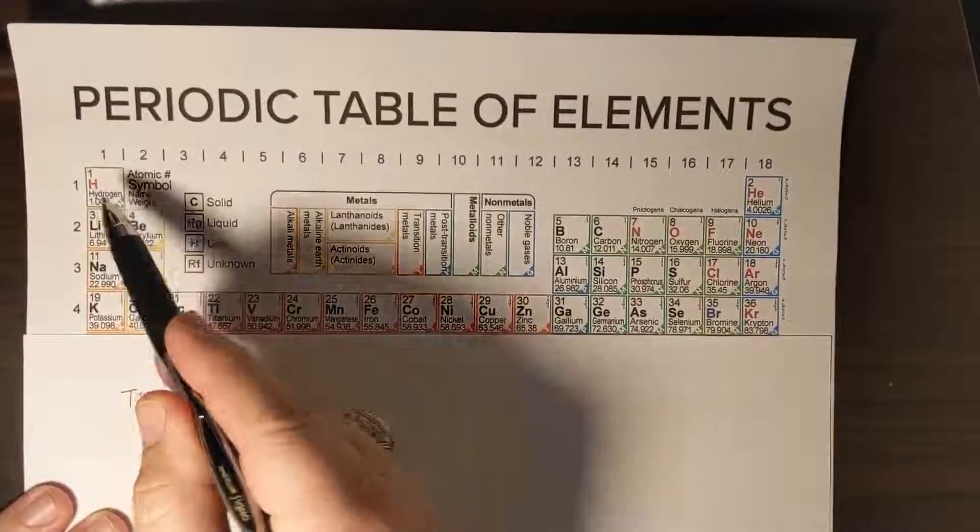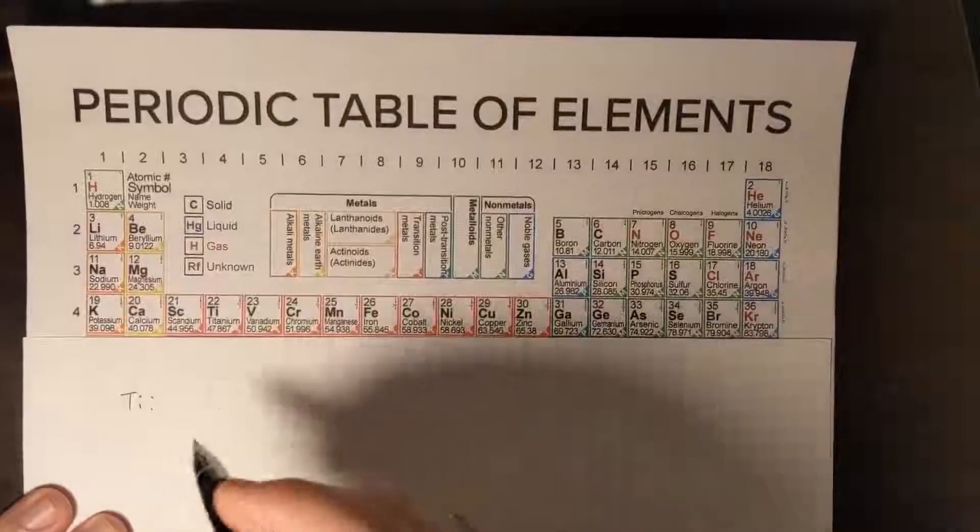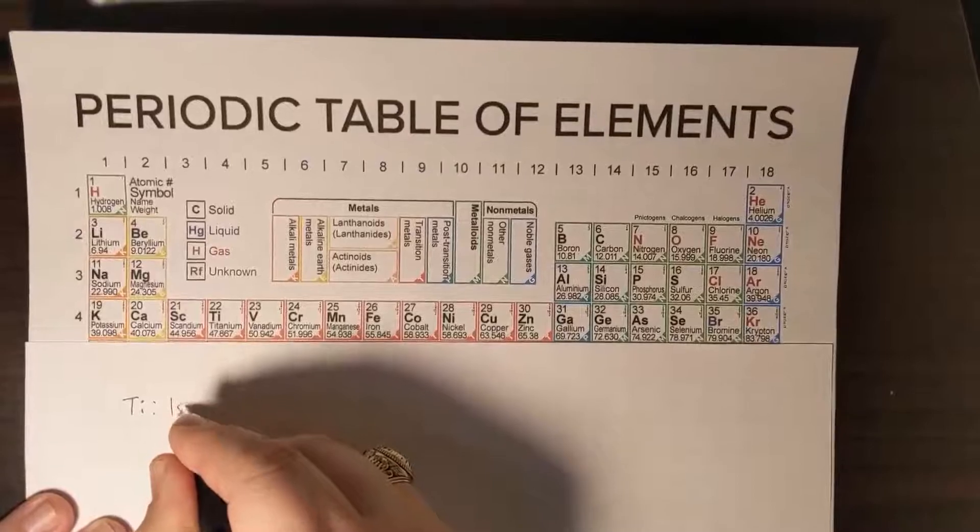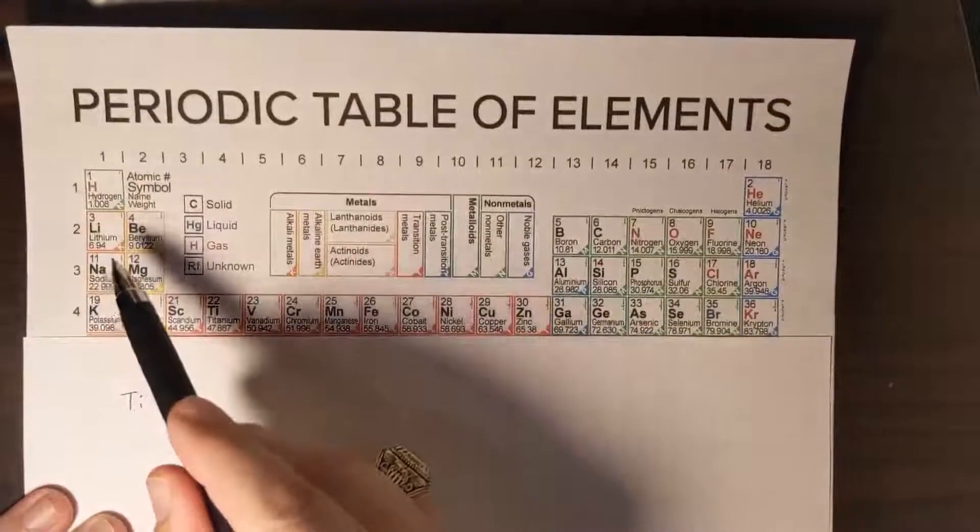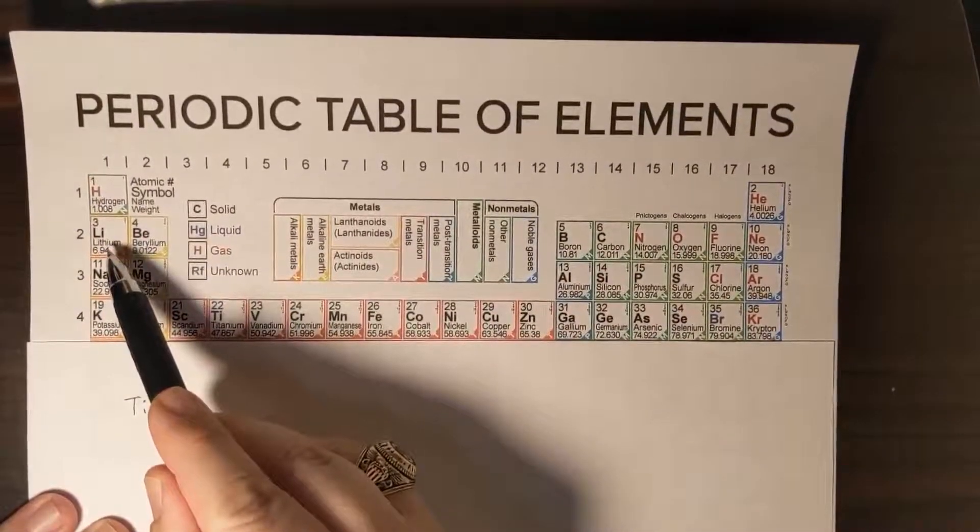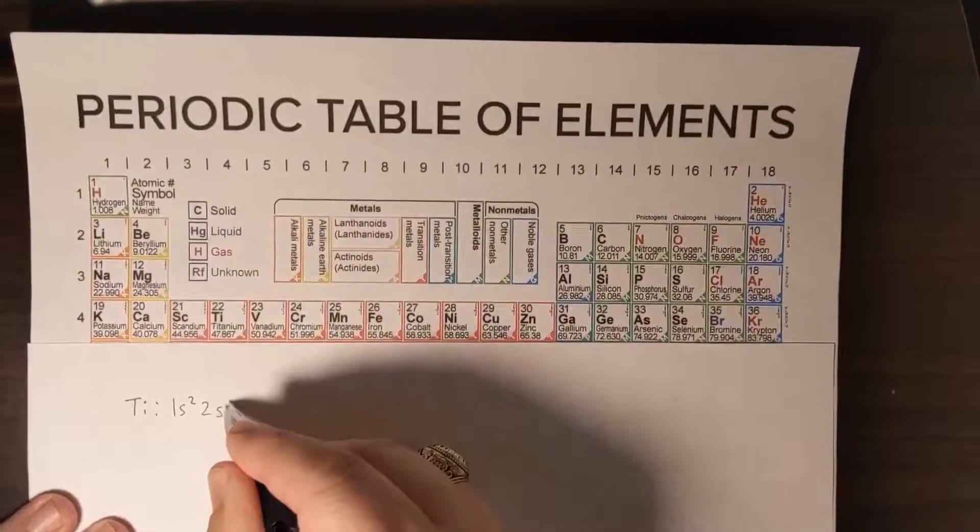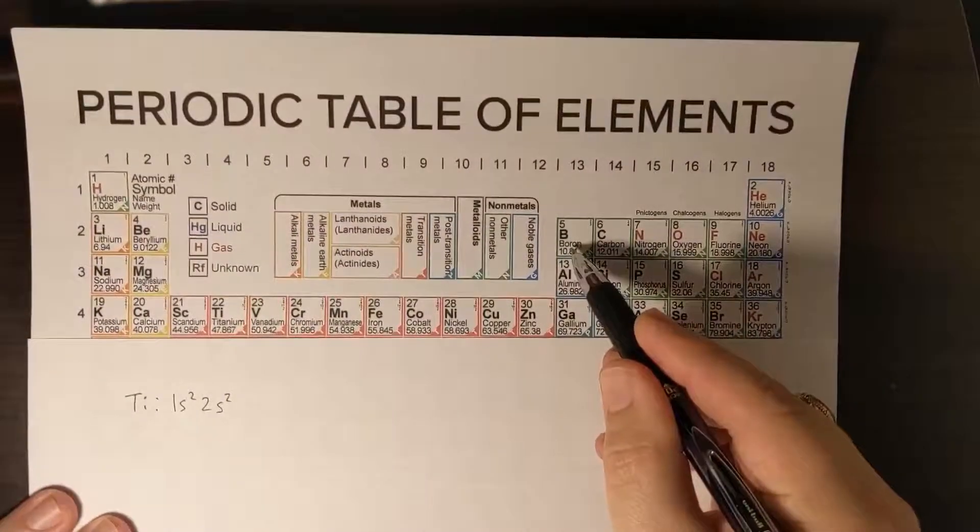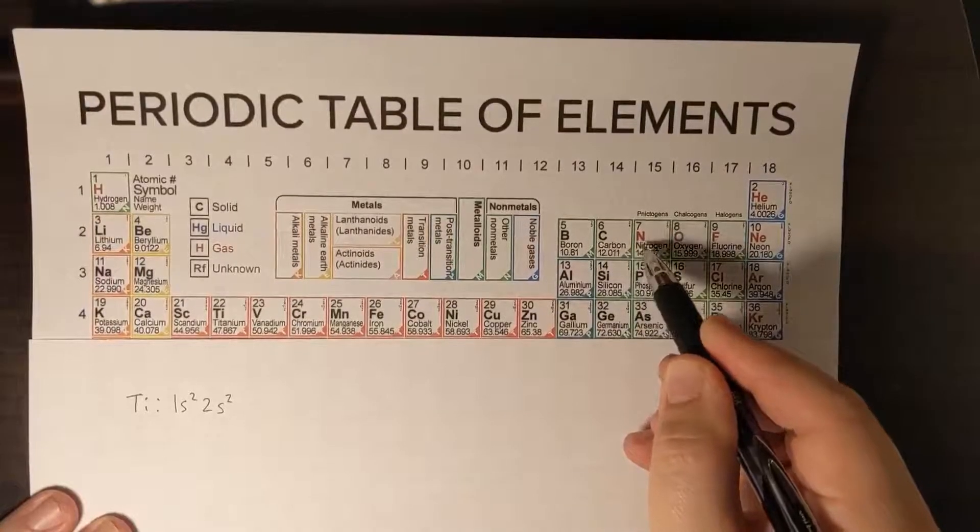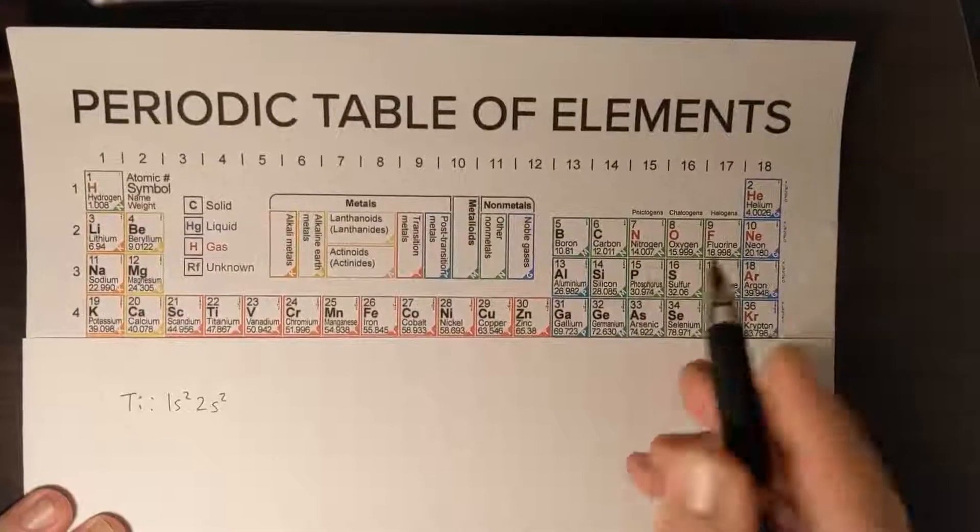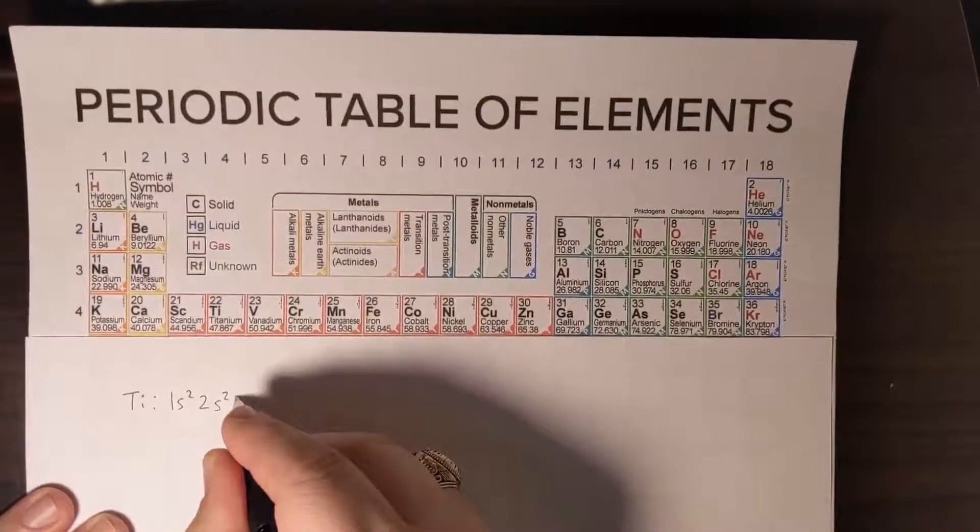So this is 1s1, 1s2. We've reached the end of that so 1s2 and now 2s1, 2s2, 2p1, 2, 3, 4, 5, 6. That finishes the 2p orbital.